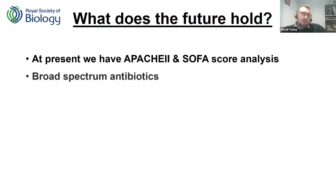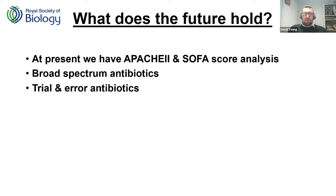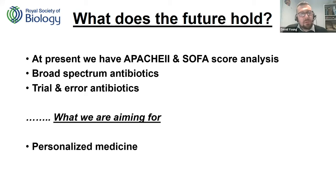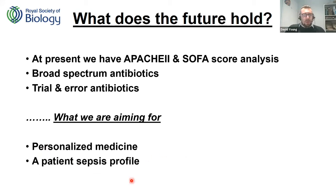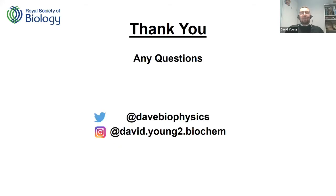What does the future hold? We currently deal with sepsis using APACHE 2 and SOFA scores, broad spectrum antibiotics, and trial-and-error antibiotics — which isn't great given antibiotic resistance. Some of our research is under embargo, but we're looking at personalized medicine and developing a PCR test — a sepsis patient portfolio — so that one test tells us everything happening in the body. The goal is to eradicate the trial-and-error option and go straight to the right antibiotic. Thank you very much — and only 27 seconds over.